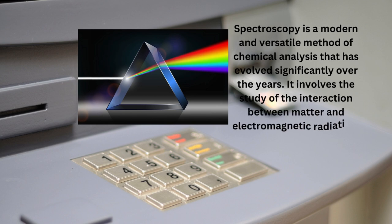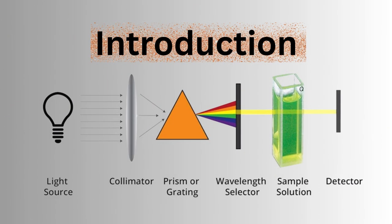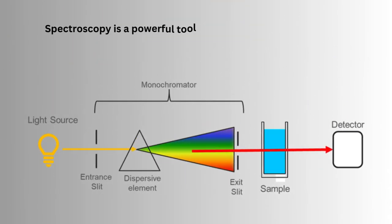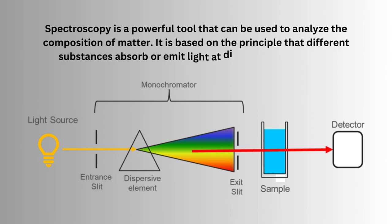Spectroscopy is a modern and versatile method of chemical analysis that has evolved significantly over the years. It involves the study of the interaction between matter and electromagnetic radiation. Spectroscopy is a powerful tool that can be used to analyze the composition of matter. It is based on the principle that different substances absorb or emit light at different wavelengths.